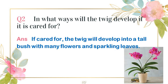In what ways will the twig develop if it is cared for? Agar aap twig ya branch ko lagate hain aur us ka khayal rakhte hain to wu kis cheez mein develop hoga? If cared for, the twig will develop into a tall bush with many flowers and sparkling leaves. Jab twig ko plant karte hain, us ka khayal rakhenge, us ko water provide karenge, sunlight provide karenge — wo bush ban jayega jis mein flowers aur leaves develop ho jayenge.